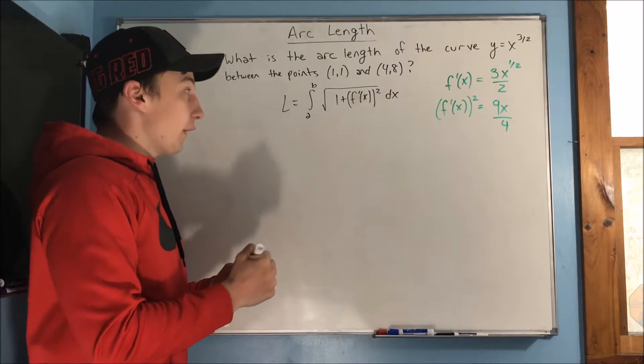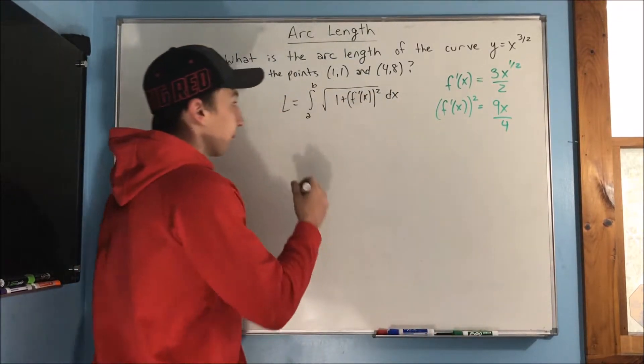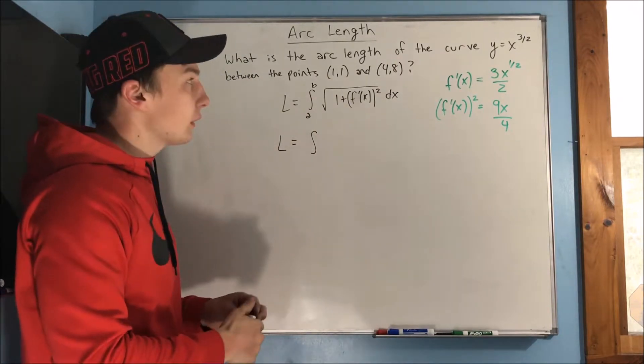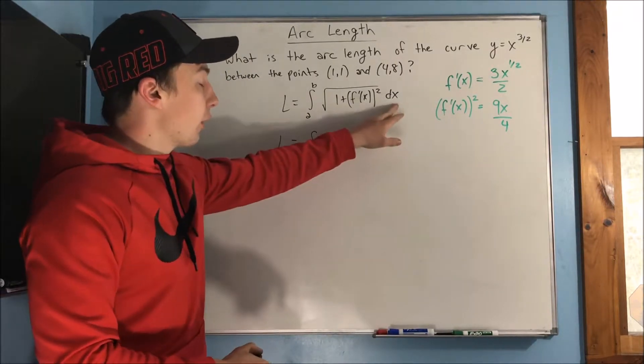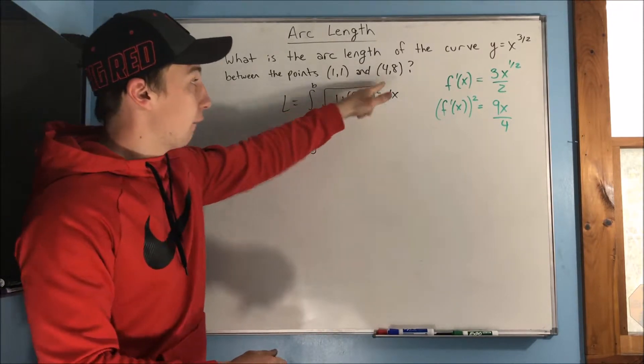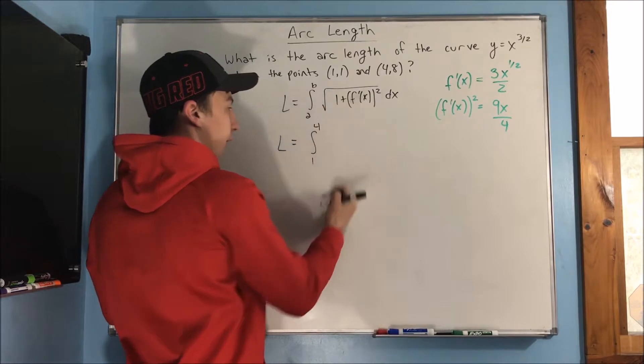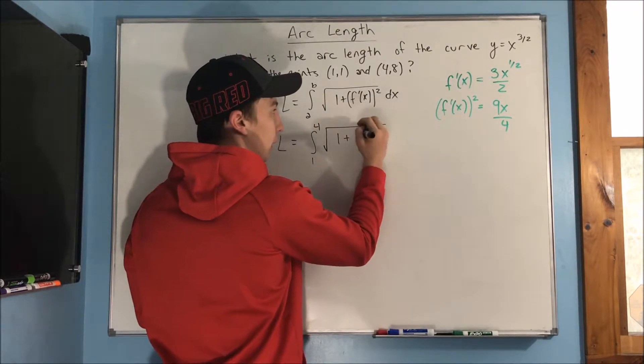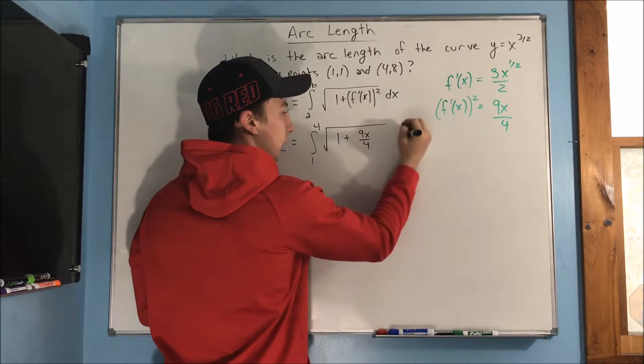Now we have to plug that in. The arc length is the integral from, well what's our bounds? Well since we're integrating with respect to x, we need to find those x endpoints, right, and that's 1 and 4. So 1 and 4, and then we have the square root of 1 plus 9x over 4 dx.